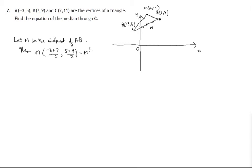That works out at 3 from 7 is 4, 4 divided by 2 is 2, 5 plus 9 is 14, divided by 2 is 7. So M is the point 2, 7. Let's add it to our working diagram.